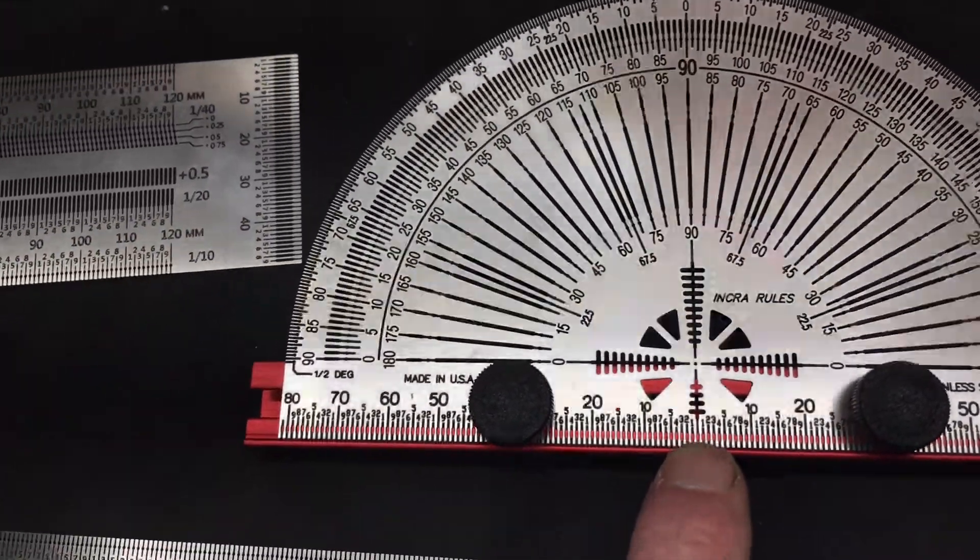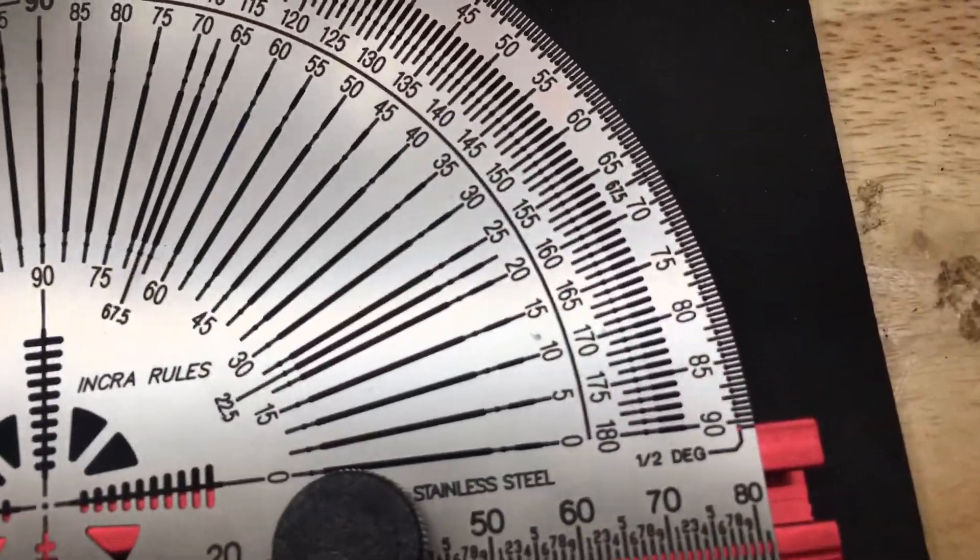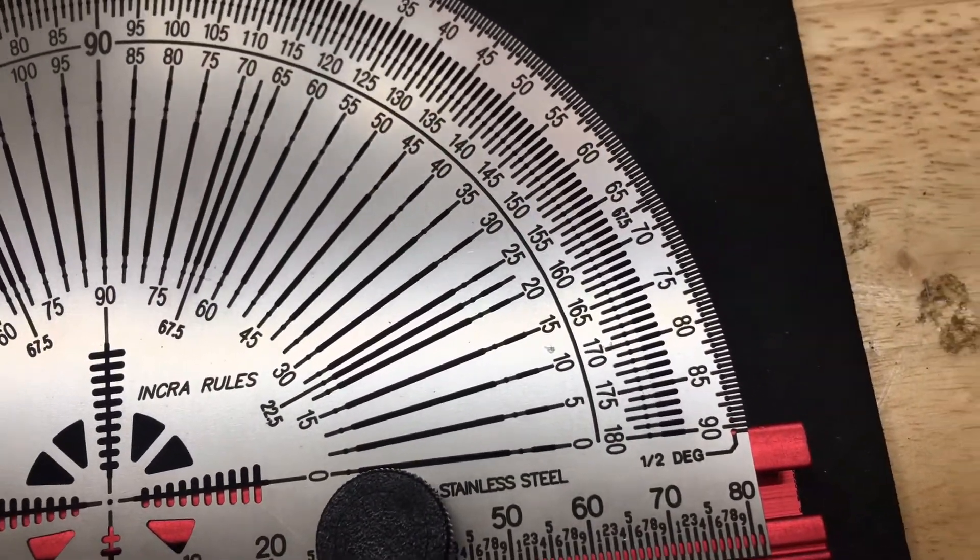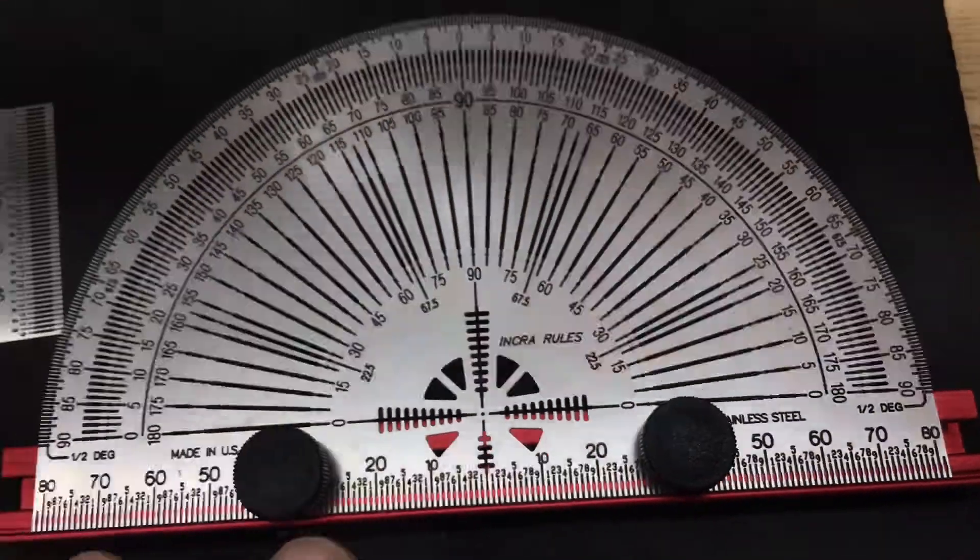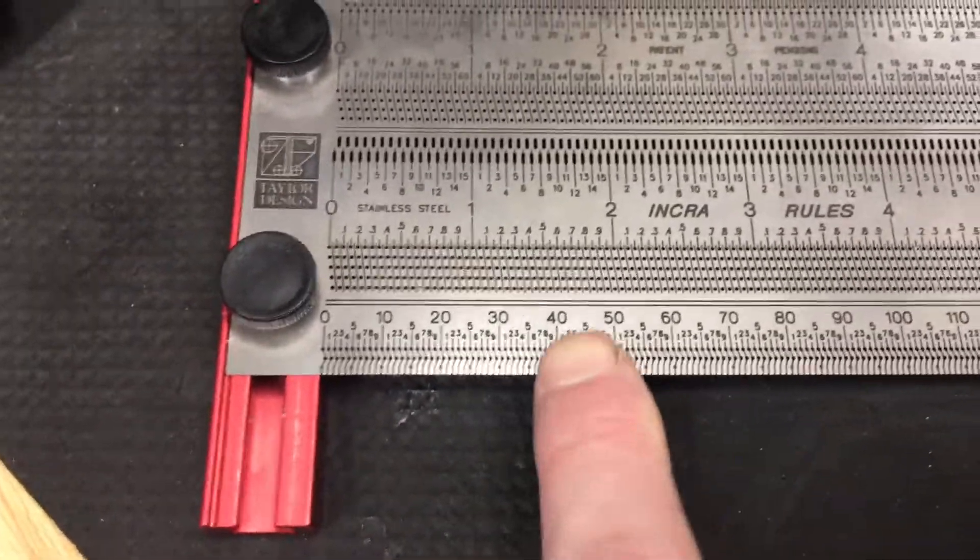Not to mention you can mark any angle that you want, even down to half degrees. It's pretty dope. And the only other thing I have here is the combination Incra ruler, you know, metric